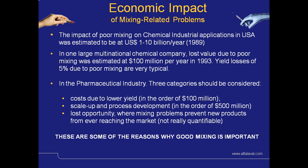Information from the handbook on industrial mixing: it was estimated in 1989 that for chemical industry applications in the USA, poor mixing was contributing to an estimated cost to the industry of 1 to 10 billion US dollars per year. In one large multinational chemical company, loss value due to poor mixing was estimated at around 100 million per year in 1993. Yield losses of 5% due to poor mixing are very typical within the industry.